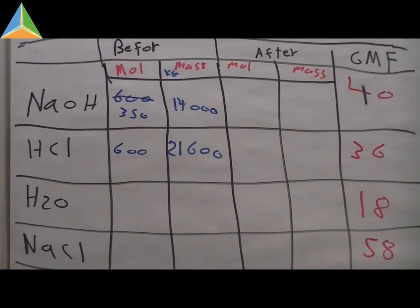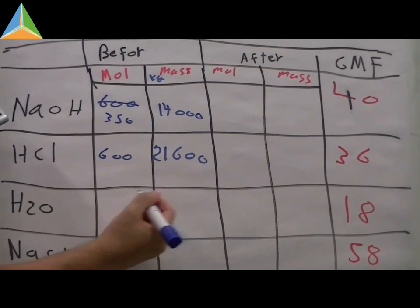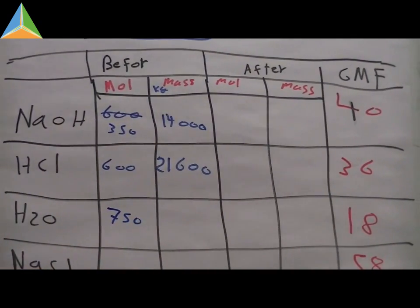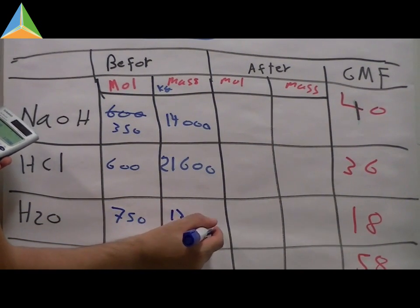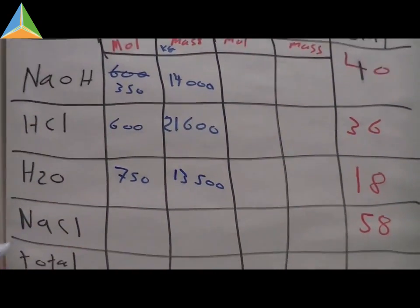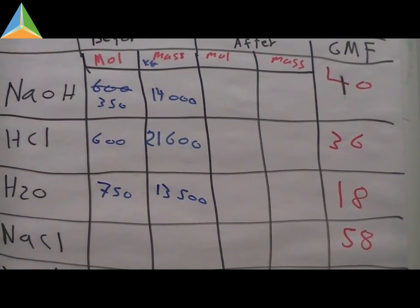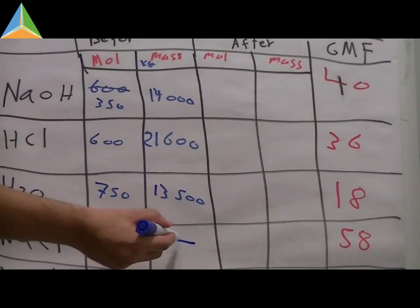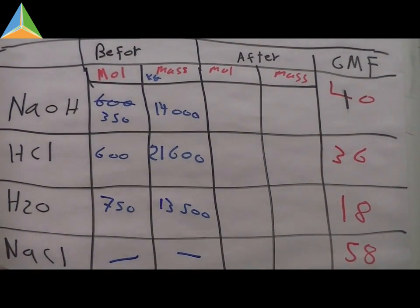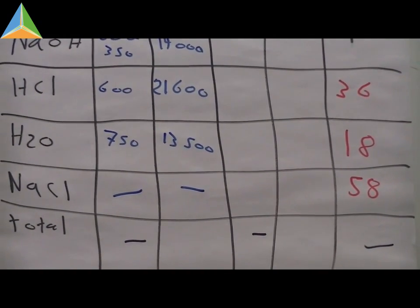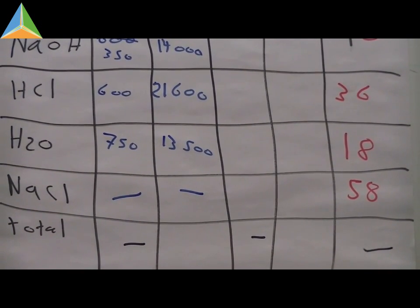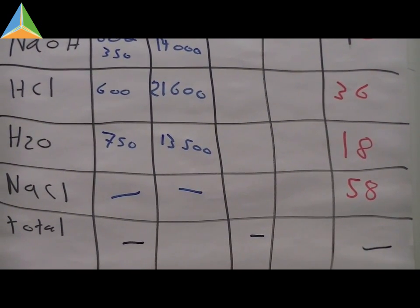So water input is 400 plus 250, which equals 650 moles. Converting to mass: 350 times 40 equals 14,000 kg for NaOH; 600 times 36 equals 21,600 kg for HCl; and 650 times 18 equals 11,700 kg for water. There is no NaCl in the input, so that entry is zero. The total input mass is 14,000 plus 21,600 plus 13,500 — wait, that comes to 49,100 kg.